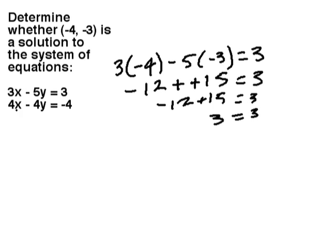So, let's try our second equation. I've got 4x, so 4 times negative 4, minus 4y, so 4 times a negative 3, equals negative 4.